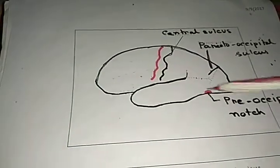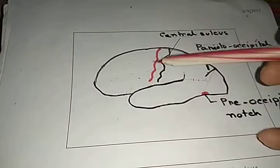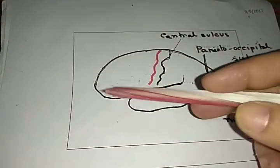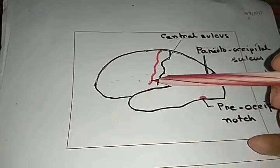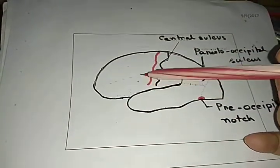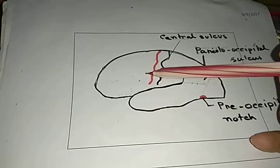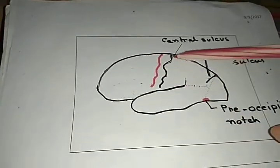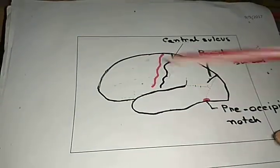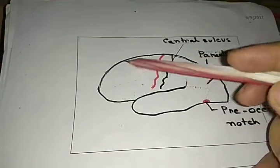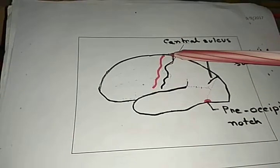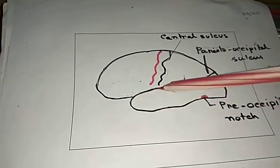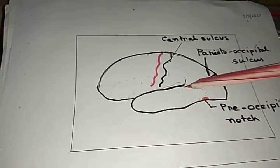This picture is showing the frontal lobe. The boundary of the frontal lobe is anteriorly the frontal pole, posteriorly the central sulcus, superiorly the superior middle border, and inferiorly the second imaginary line.